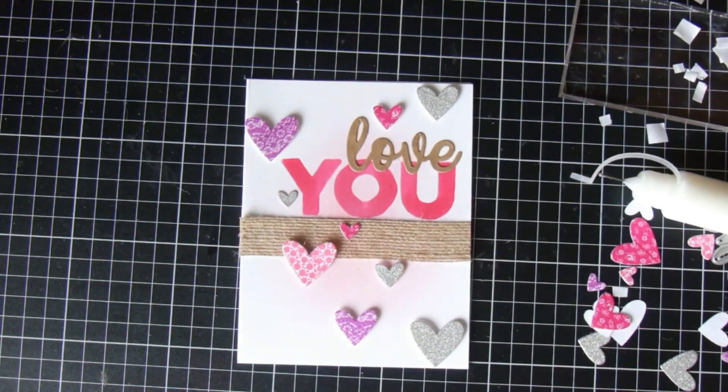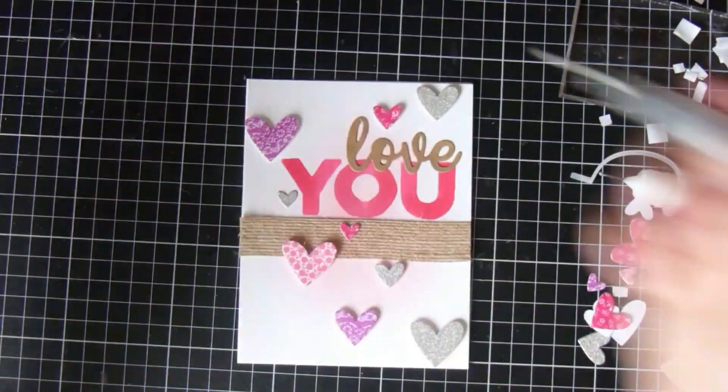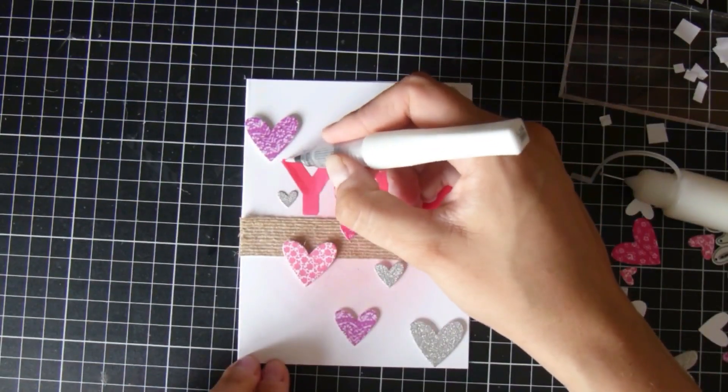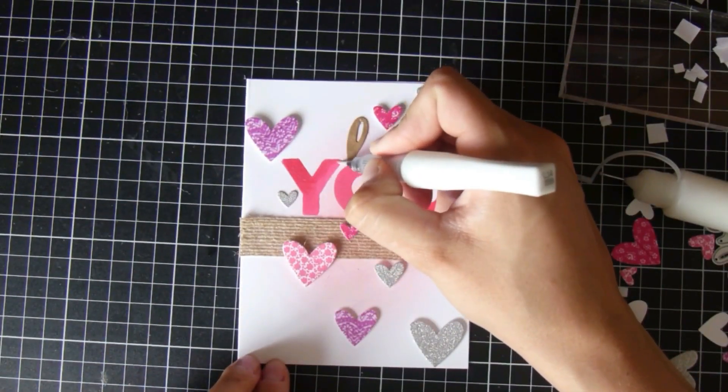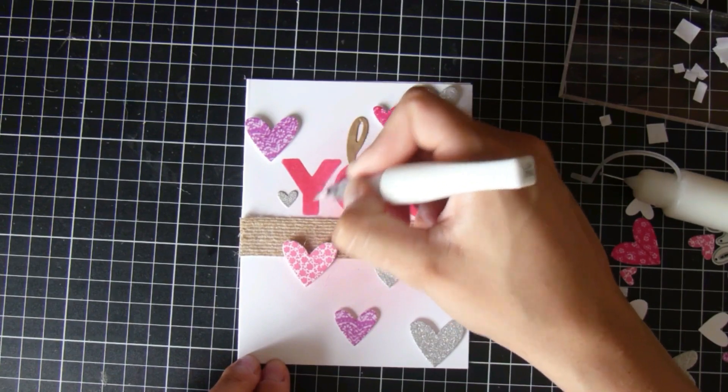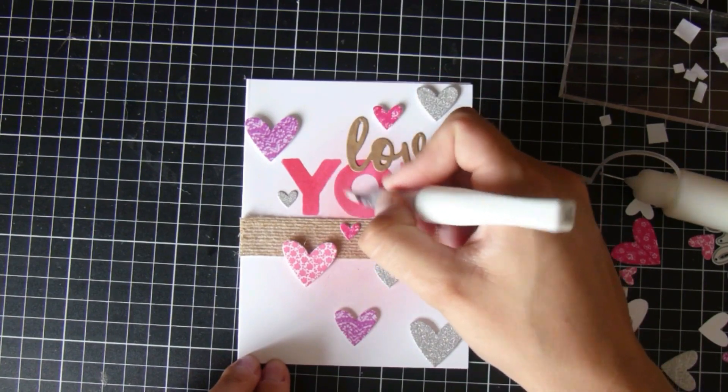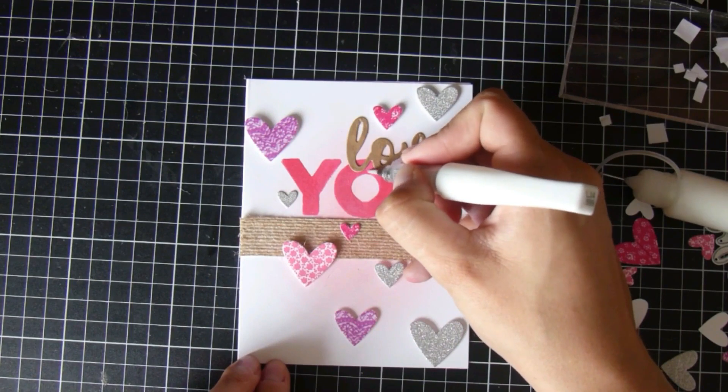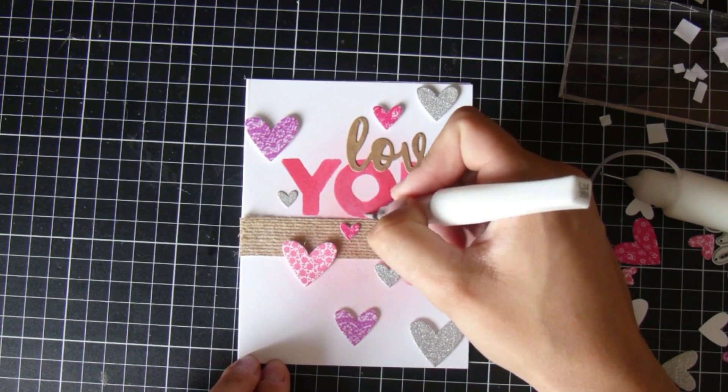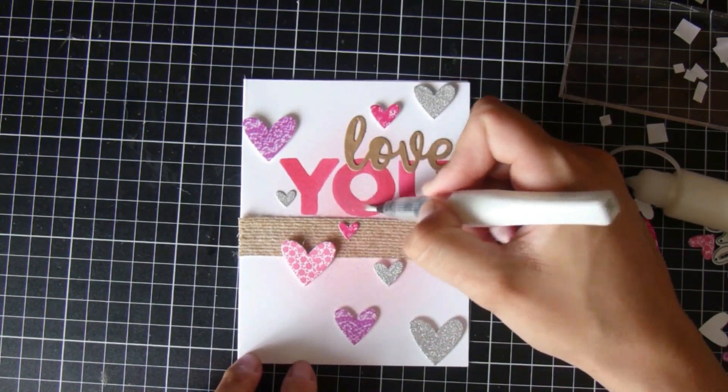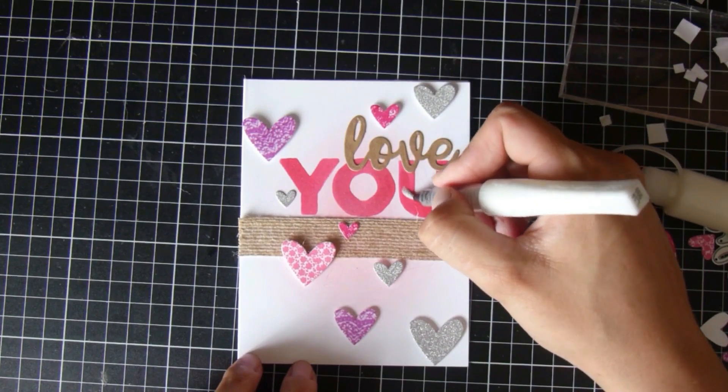The only other thing I did to this card was add a little bit of Wink of Stella to the 'you,' the big large word that says 'you,' and all of the love hearts that I had die cut from that washi tape paper that I created. So yeah, nice and simple and had fun.